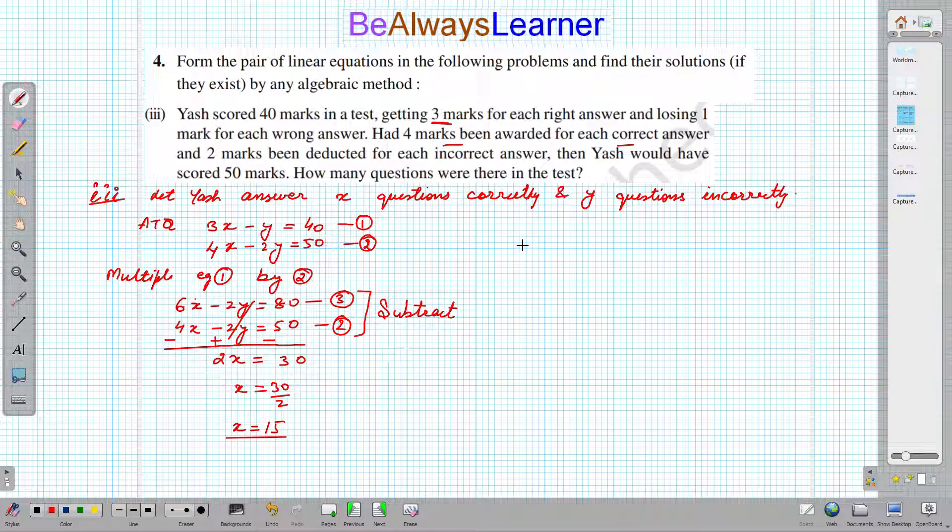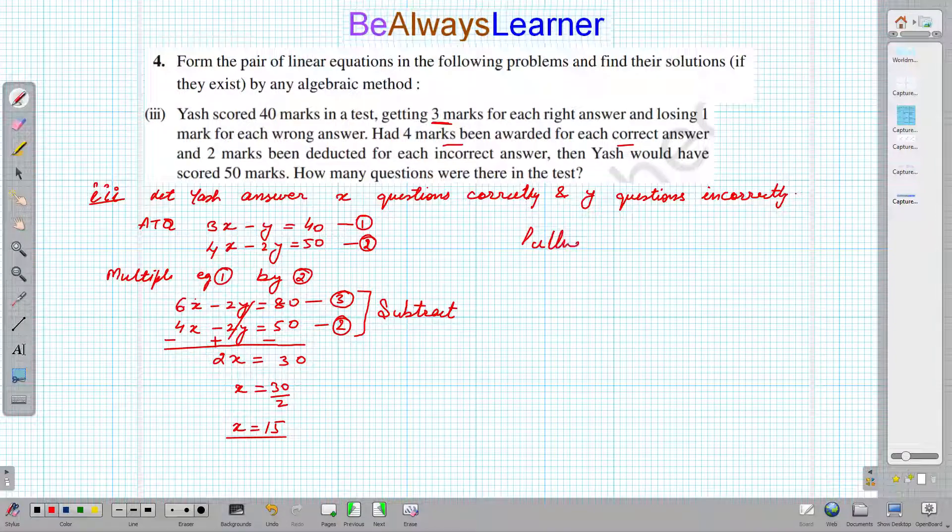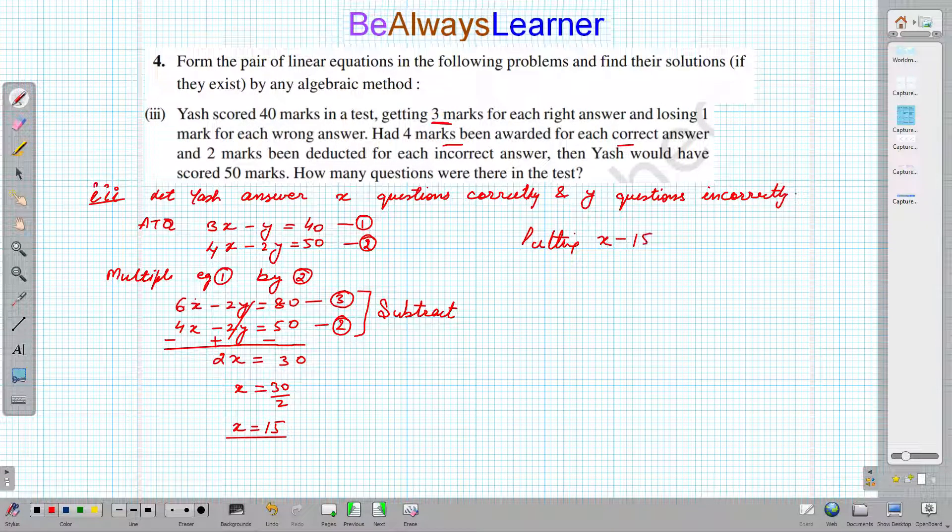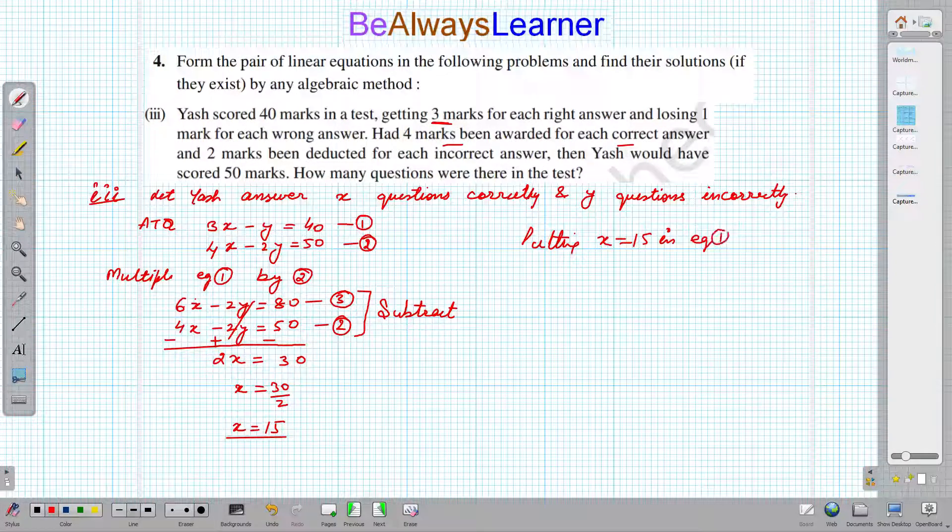x value is 30 by 2, so that is nothing but 15. x equals 15.